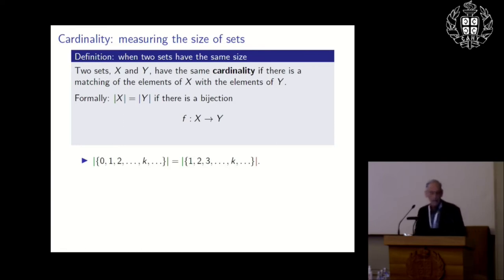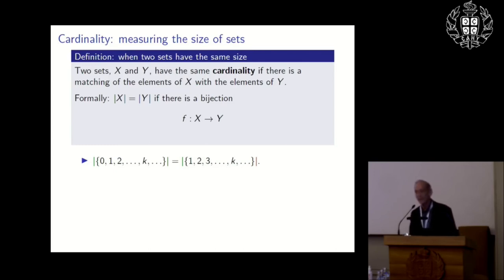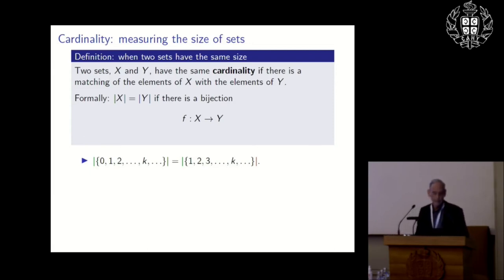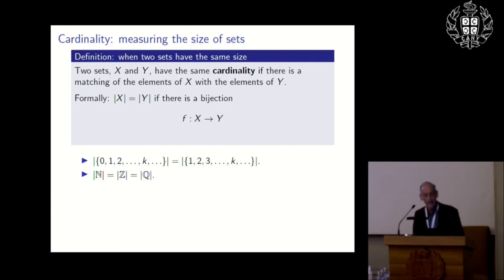The counting numbers starting at zero have the same cardinality as the counting numbers starting at one — the bijection is just add one. This already shows a surprising property of infinite sets: if you have an infinite set and you remove a point, the size can stay the same. Returning to our simple sets, the counting numbers, integers, and rationals, even though they look very different, all have the same size.